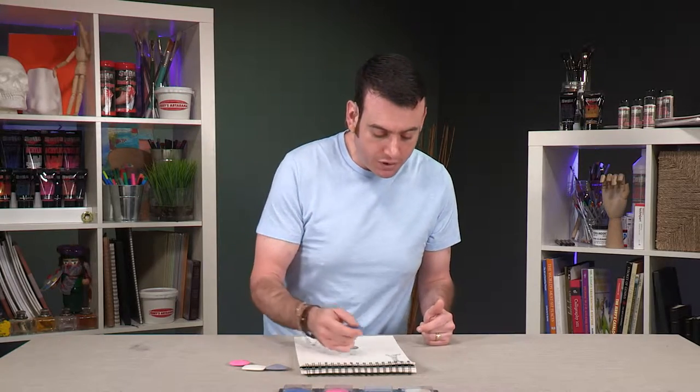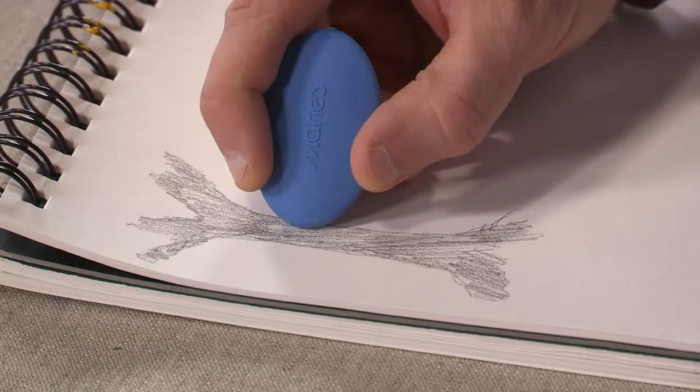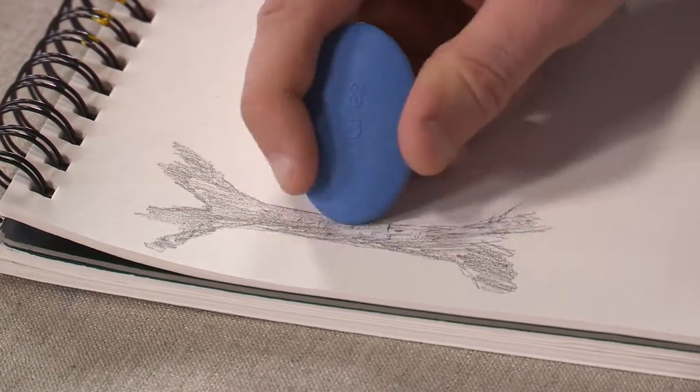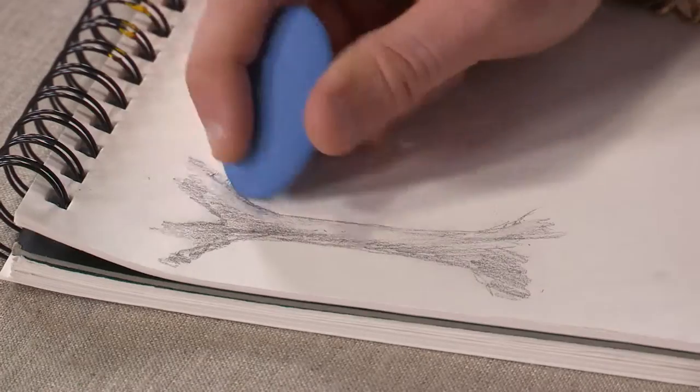So I have a little tree trunk here and we're going to just come in and erase out some of that graphite that I had laid down so I can show you how these can be used for creating highlights.